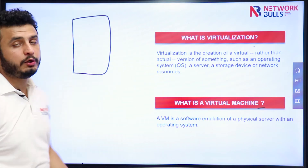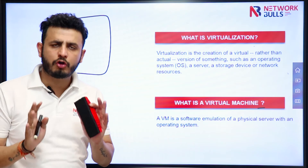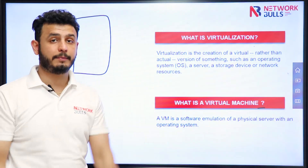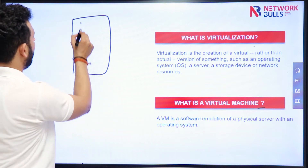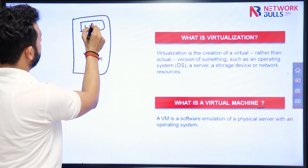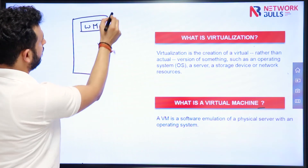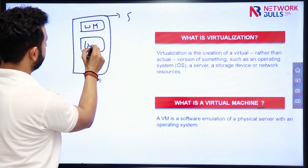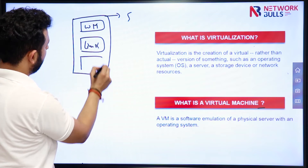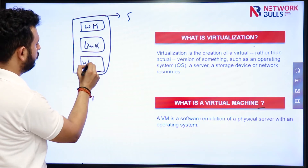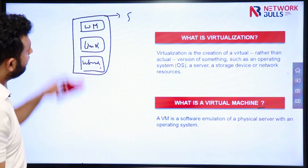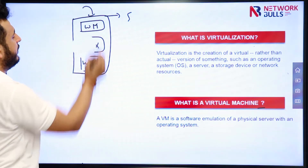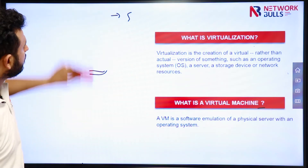This time you will not install a single application on the physical machine — you will install multiple applications. For example, you have one Windows machine, one Linux machine, and one Ubuntu machine. So we have different virtual machines deployed on this particular server.